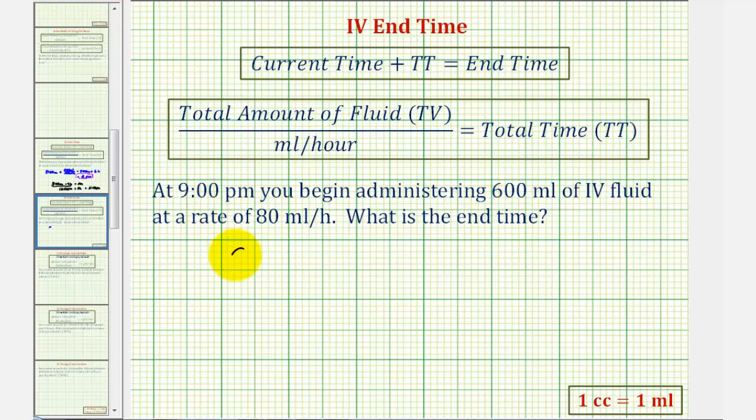So we start with 9 p.m. and then we add the total time the IV will run, which would be the volume or 600 mls divided by the flow rate of 80 mls per hour.